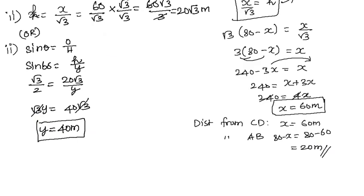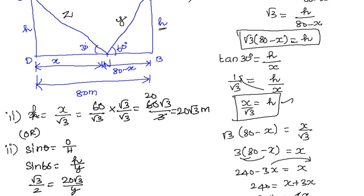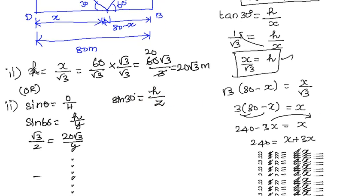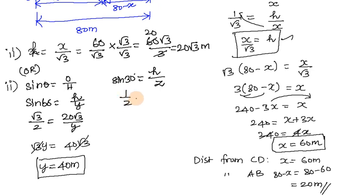If you use this side, sin 30° equals opposite h by hypotenuse z. Sin 30° equals 1 by 2. h equals 20√3 by z. If you cross multiply, z equals 40√3. So for the second submission, either choice is the answer.